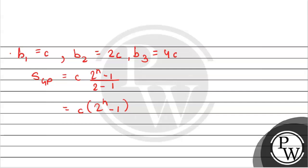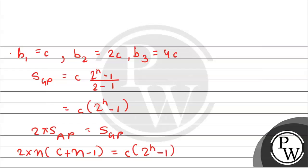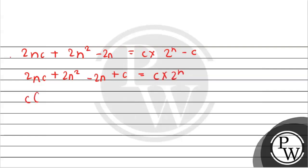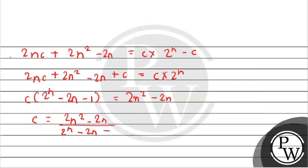Now let's look at the equality condition. The condition to satisfy is 2·S_AP = S_GP. Substituting the expressions: 2N·c + 2N² − 2N + c = c·2^N − c. Rearranging, we get c = (2N² − 2N) / (2^N − 2N − 1).